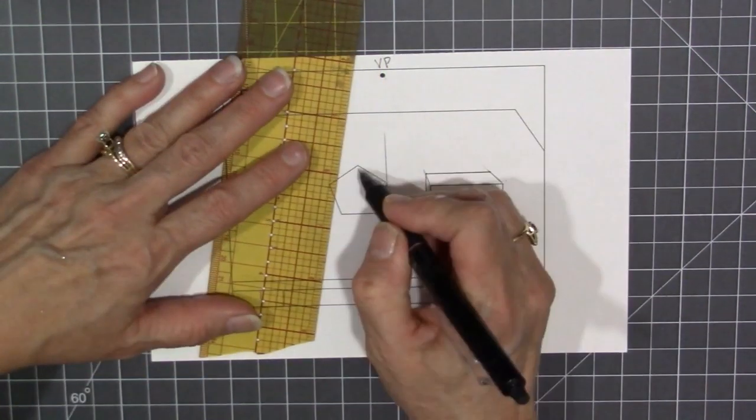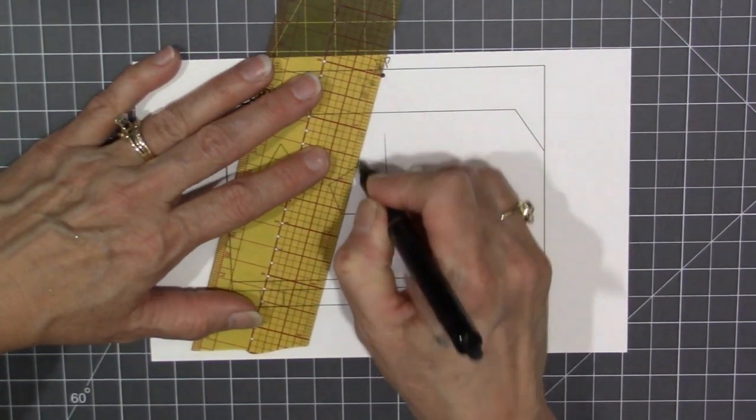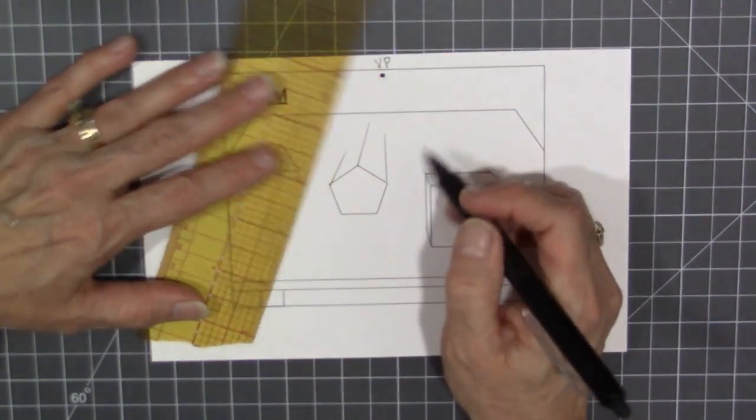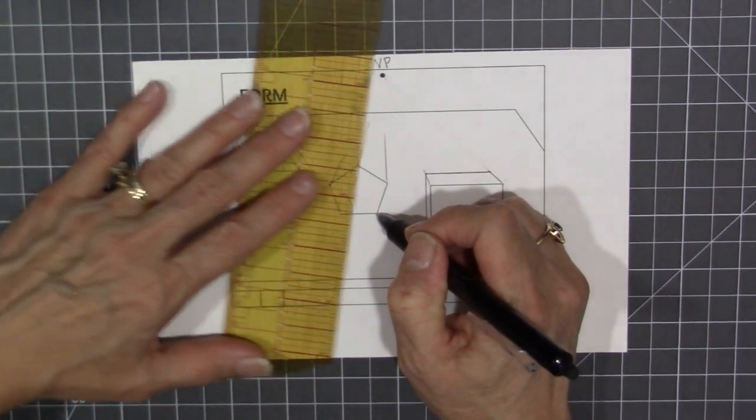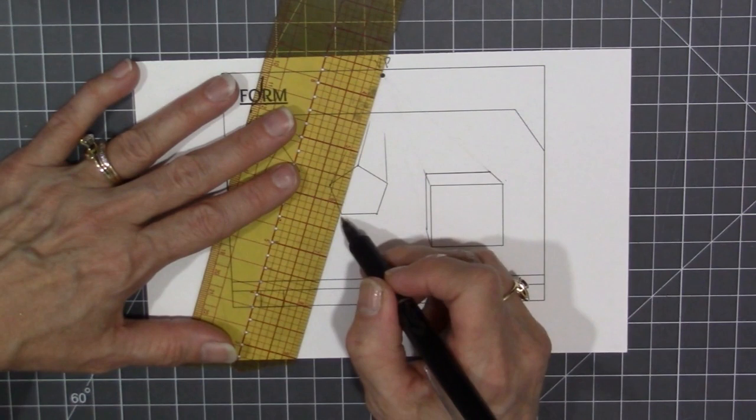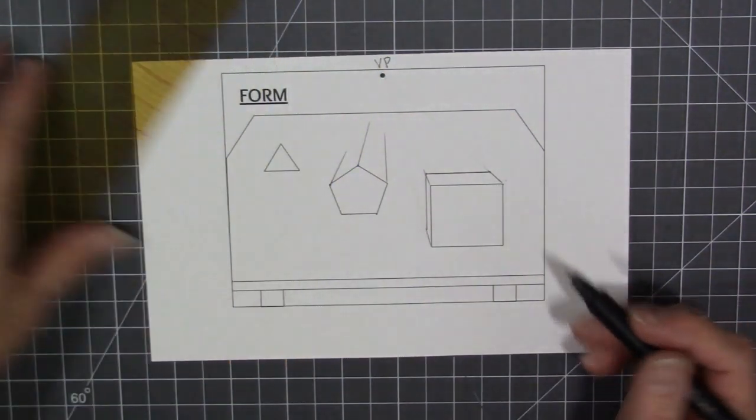Each corner is a vanishing line exactly to the vanishing point from every corner that would not go through the shape. So I can't draw that corner or this corner because it would go through the middle of the shape.